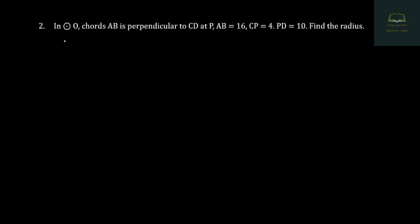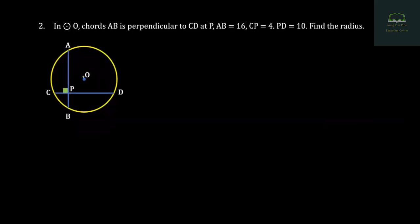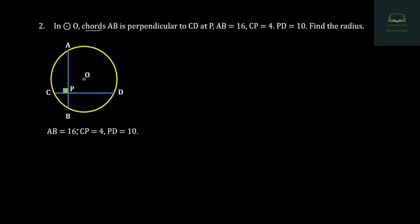Question number 29: what is the question? For the question, cos A, B is perpendicular to C, D, at B. AB = 0R, CD = 0R, PM = 980, and AB = 16, CP = R4, PD = R10. Find radius. Achievement: OEP, OVP, OEP, OEP, OEP.